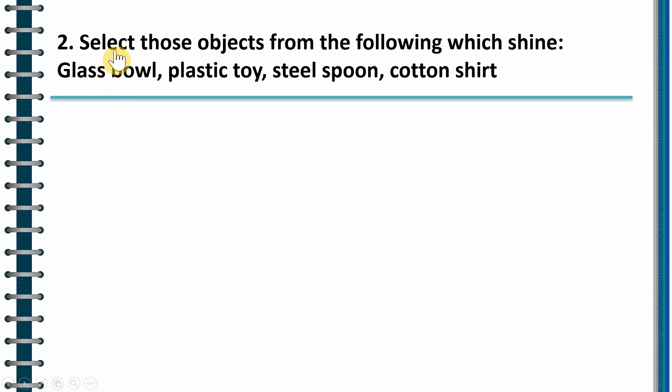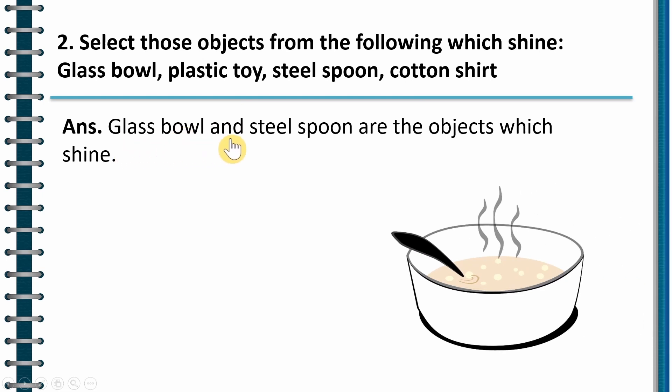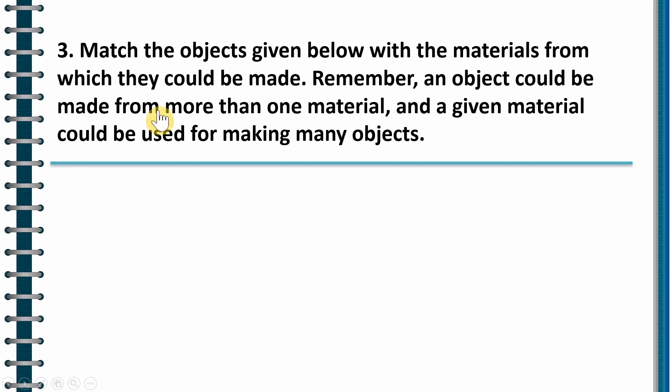Next question, select those objects from the following which shine and the examples are glass bowl, plastic toy, steel spoon, cotton shirt. The answer is glass bowl and steel spoon are the objects which shine.